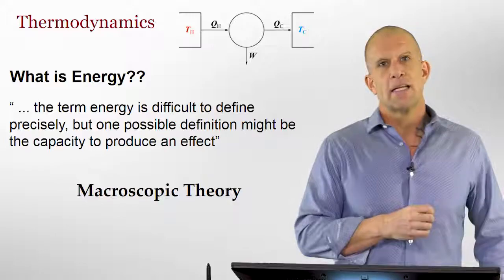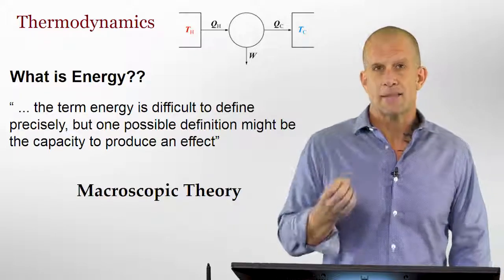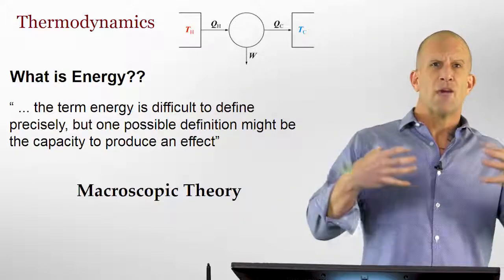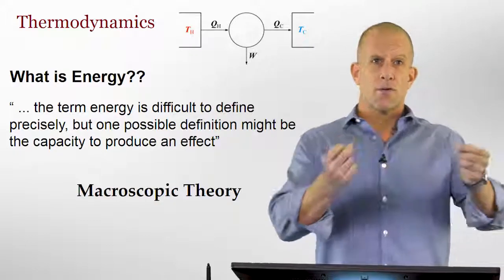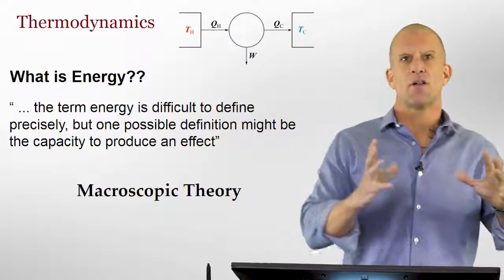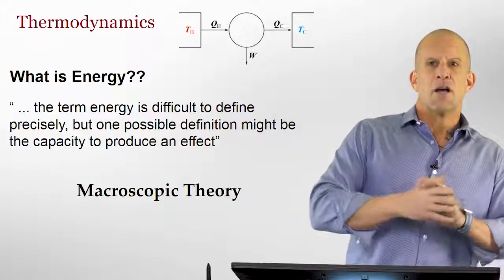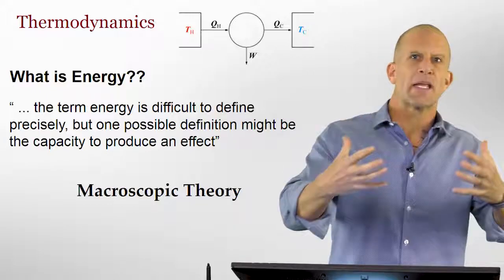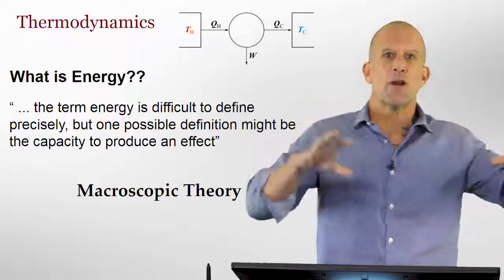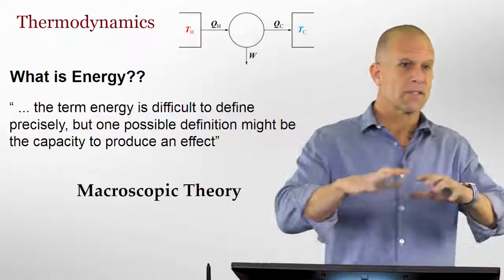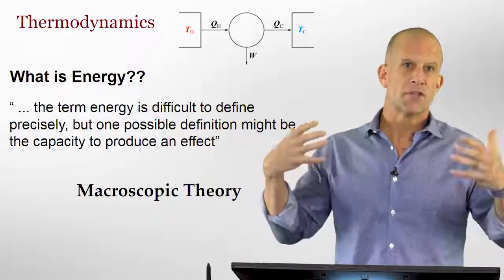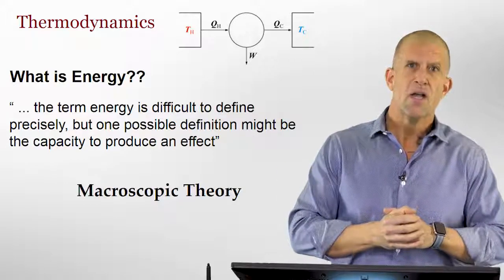One of the first things to keep in mind about thermodynamics is it is a macroscopic theory. Microscopic theories like classical mechanics define position and momentums for every single particle, element, compound, or atom. And in quantum mechanics, we define a probabilistic wave function that has the probability of every one of these components — atoms or molecules — and their position and how they evolve in time.